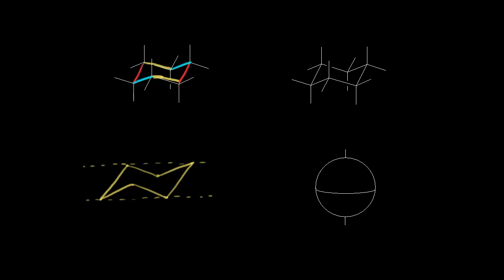Next, you need to think about putting in your groups. In this case we're talking about cyclohexane, so we're only dealing with hydrogens. First, we're going to put in the hydrogens that we call axial groups. You can think about the Earth — this would be the axis going straight up and down. So hydrogens that go straight up and down are called axial hydrogens. We're going to start at carbon one and draw in an axial hydrogen going straight up.